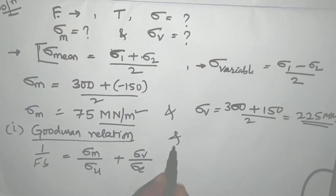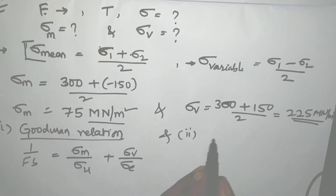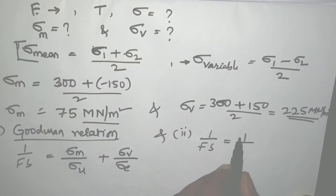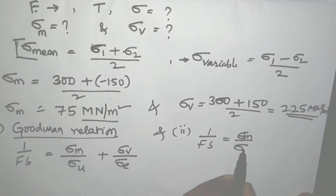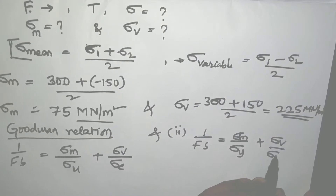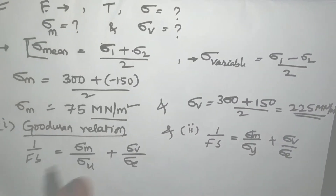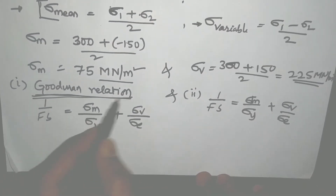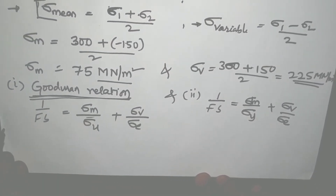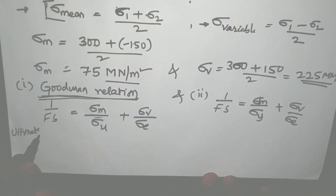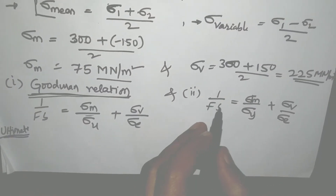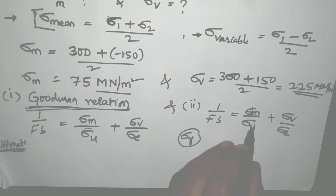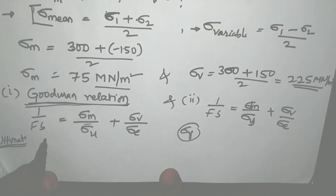For the Soderberg equation simultaneously: one divided by FOS equals Sigma_M divided by Sigma_Y plus Sigma_V divided by Sigma_E. The key difference between the two equations is that the Goodman relationship is derived based on ultimate strength Sigma_U, while Soderberg is derived based on yield strength Sigma_Y.